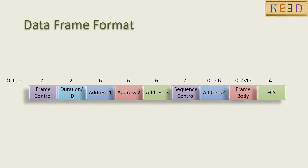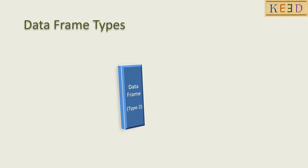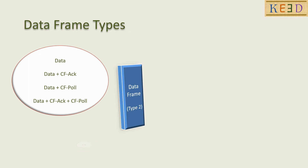Now let us understand the data frame format. The data frame has all the fields; address 4 is optional. The frame body can vary from 0 to 2312 octets. The data frame has type 2, and as per subtype, these are the different data frames.